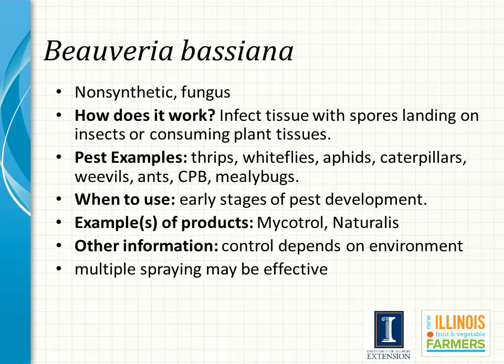Beauveria bassiana is a non-synthetic fungus that infects tissue by developing spores that land on the insect. The insect may also ingest plant tissue that contains these spores. Thrips, aphids, whiteflies, caterpillars, weevils, ants, Colorado potato beetle, and mealybugs have all shown some control when utilizing Beauveria bassiana. The use of this fungus for control will depend largely on the environment for the spores to effectively land and stick to the outer layer of the insect, which is why multiple spraying may be more effective.